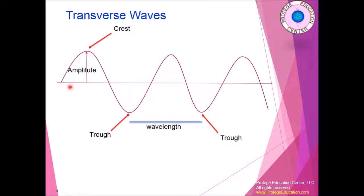Transverse waves are drawn going up to a peak and then coming back down, repeating that phase. Whatever is on the top, when it reaches the top level, it's called the crest. When it goes down to the lower level, it's called the trough. The distance between the resting position and the crest is one key measurement.